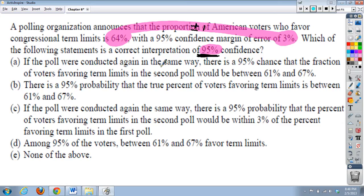So if the poll were conducted again in the same way, there's a 95% chance, we said any time they use the 95% to talk about probability, this is not correct. There's a 95% probability, wrong, can't use it that way. If the poll were conducted again the same way, there's a 95% probability, wrong, no, I don't think so.